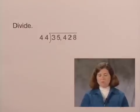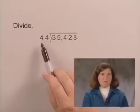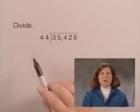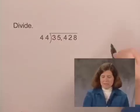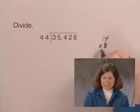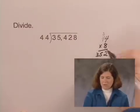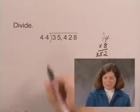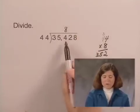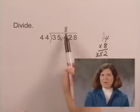Now the question is how many 44's are in 354? We need to estimate this. We can round 44 to 40 and think how many 40's are in 350 or so, and our estimate would be 8. So let's see, we multiply 44 times 8, we get 352. So we write, and that is less than 354, so we write the 8 above the 4.